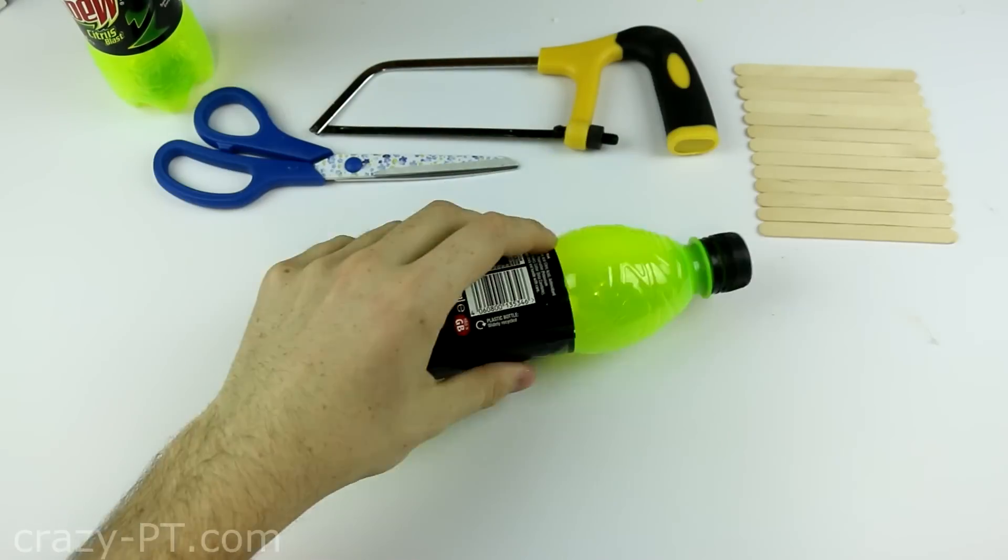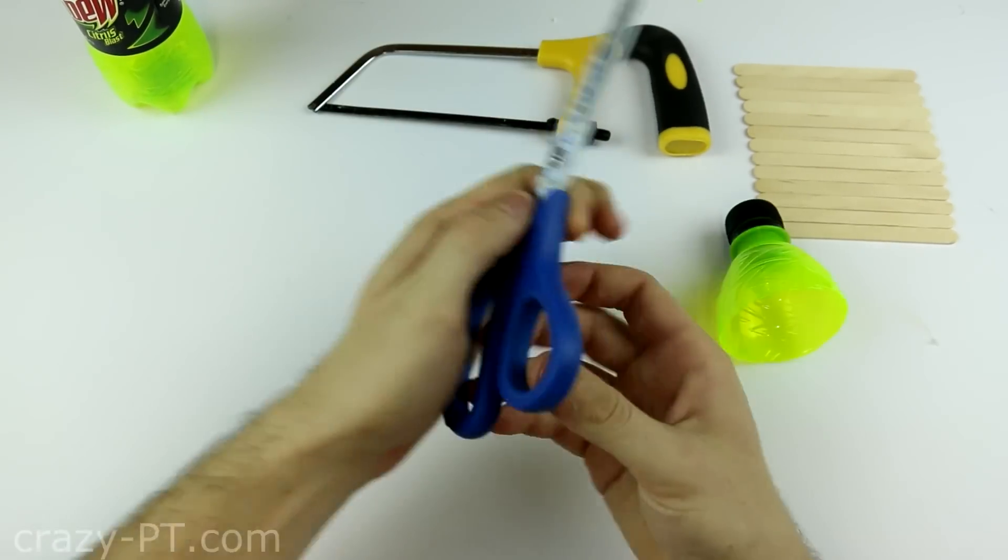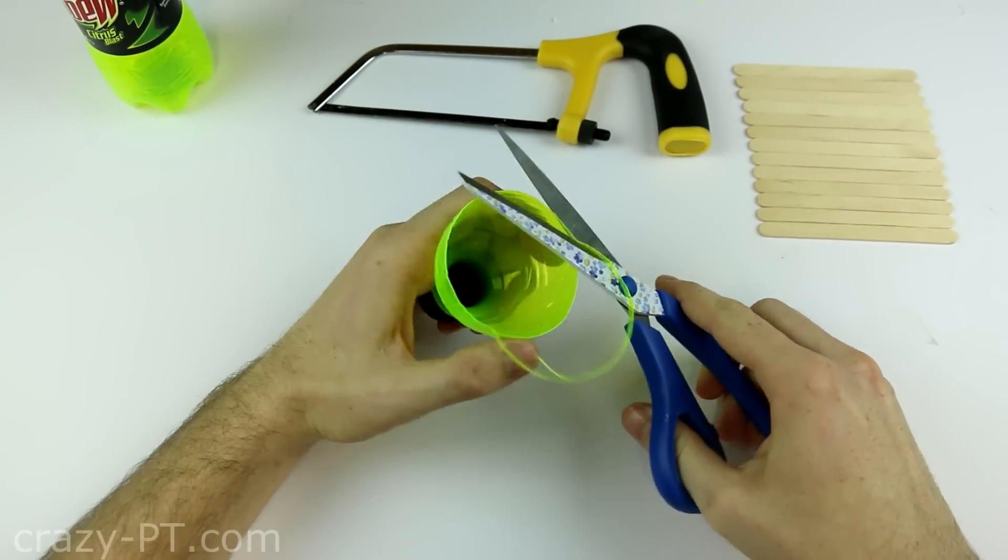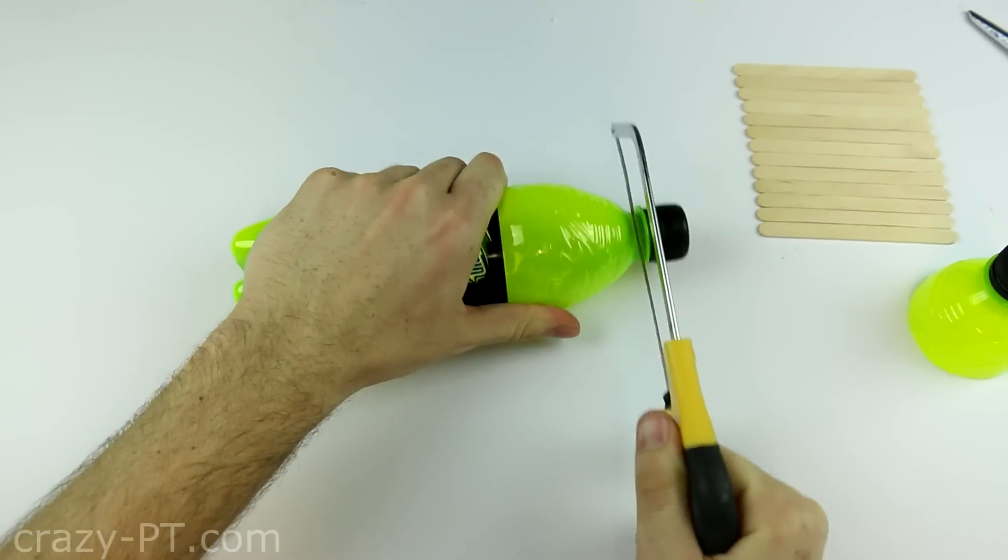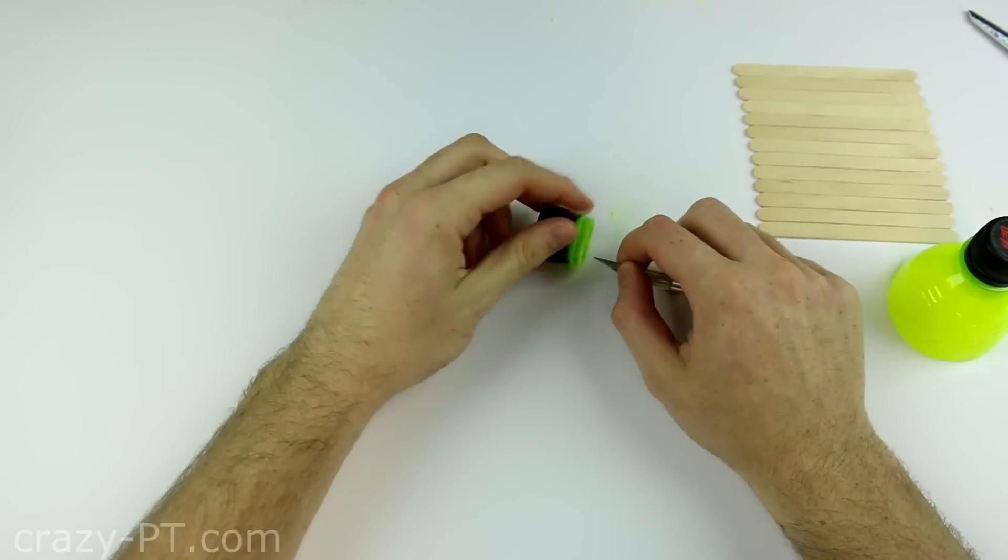First cut the top half off with a craft knife and after clean the edges using a pair of scissors. Now cut the other bottle top using a metal hack saw and don't forget to clean the edges, just like that.